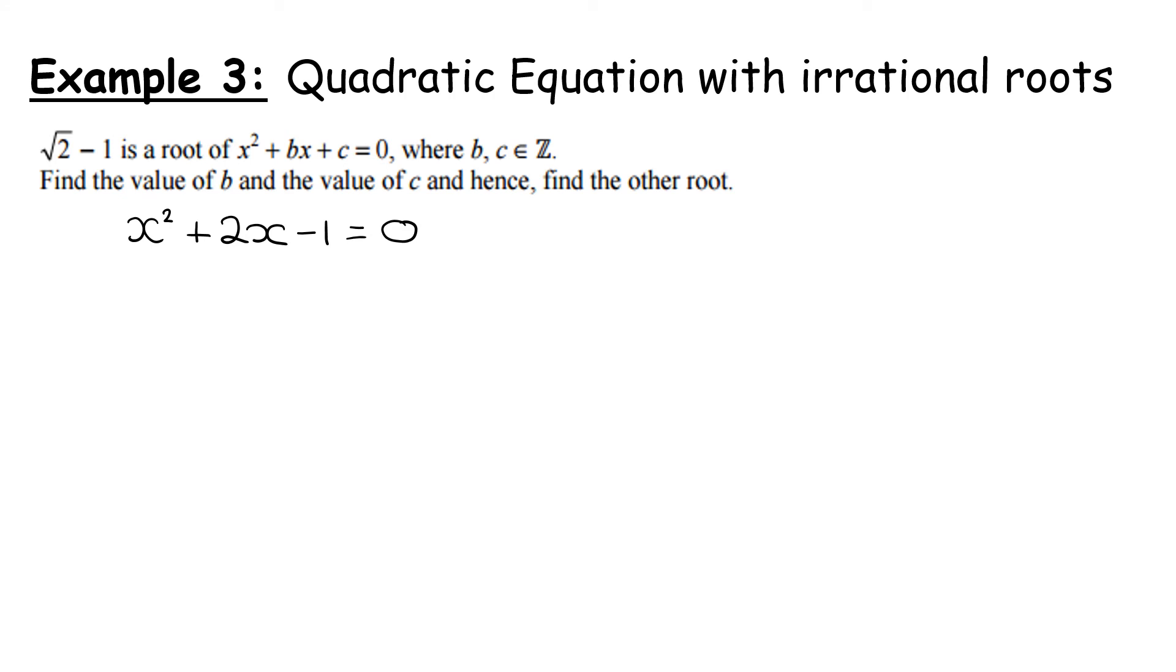So I've done the first two parts of that. I figured out b and I figured out c. So now that I know b and c, I can rewrite my quadratic as x² + 2x - 1 = 0. And the last thing I've been asked to do is hence, so now that I've done that, find the other root. So I'm going to use the quadratic formula or minus b. So ax² + bx + c = 0. We have a = 1, b = 2, c = -1.